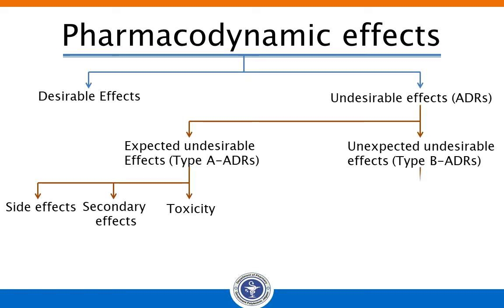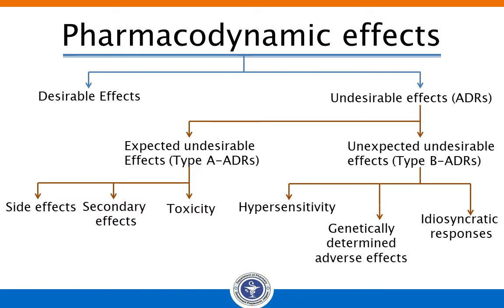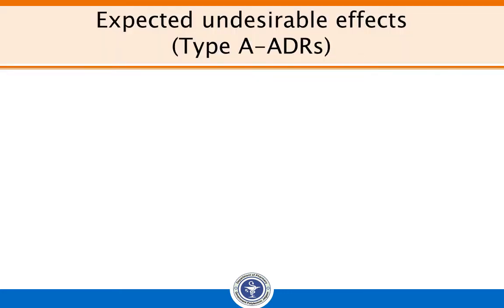Type A ADR are classified into side effects, secondary effects, and toxicity. Whereas type B are classified as hypersensitivity, genetically determined adverse effects, and idiosyncratic responses. The very first adverse drug reaction we will look at is the expected undesirable effect — side effects.